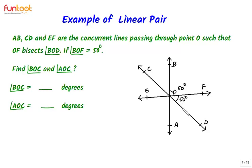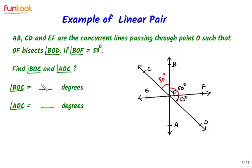If we know angle BOD, how can we find angle BOC? We can see that angle BOD and angle BOC form a linear pair. So if this complete angle is 100 degrees, then this angle will be 80 degrees, because together they will make 180 degrees. So here, angle BOC is 80 degrees.